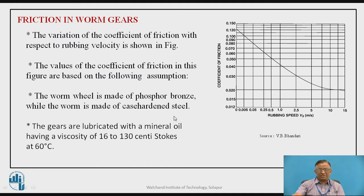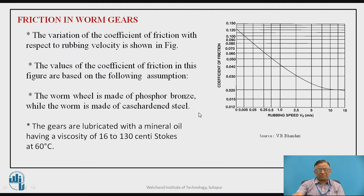Once we know the sliding or rubbing velocity, we can use a standard chart to determine the coefficient of friction. Two assumptions are made in this standard chart: the worm wheel is made of phosphor bronze and the worm is made of case hardened steel, which is a common material combination. The lubrication considered has viscosity of 16 to 130 centistokes measured at 60 degrees centigrade, using a mineral oil. Based on these standard conditions, corresponding to the rubbing speed we can establish the coefficient of friction for the worm and worm wheel.